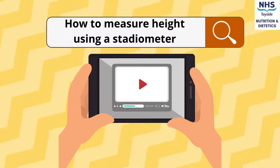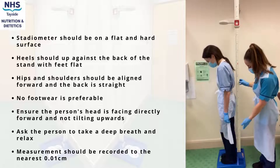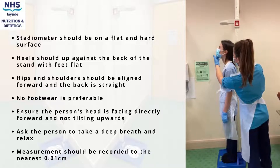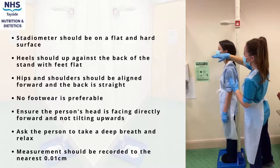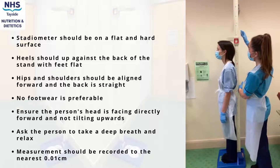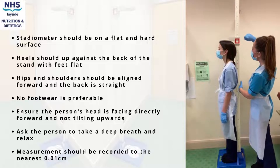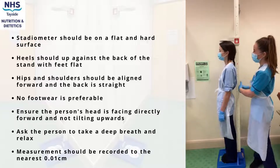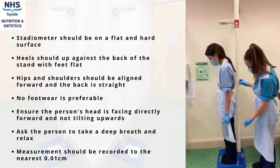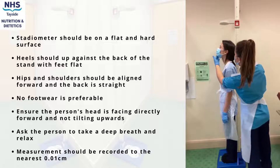To measure height using a stadiometer, place it on a flat, hard surface. If possible, the person should remove their footwear and step on facing away from the stadiometer, with hips and shoulders aligned forward. Ensure the person's head is not tilted upwards but facing forwards. Ask the person to take a deep breath, then lower the head plate down until it is gently pressed against the top of their head. Record the height visible between the two red arrows to the nearest 0.1 cm, then lift the head plate and ask the person to step away.